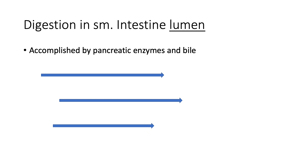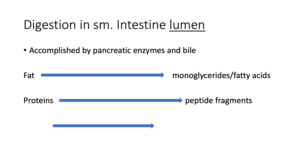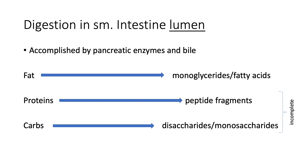The digestion that occurs in the lumen of the small intestine is accomplished by pancreatic enzymes and bile. Fats are broken down into monoglycerides and fatty acids — completely digested within the small intestine. Proteins are broken down into peptide fragments, and carbs are broken down into disaccharides and monosaccharides. But those latter two are not completely digested, so we're going to look at how we break peptide fragments and disaccharides down further within the brush border.